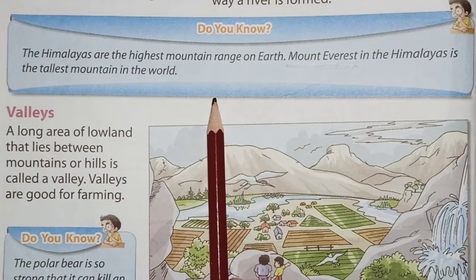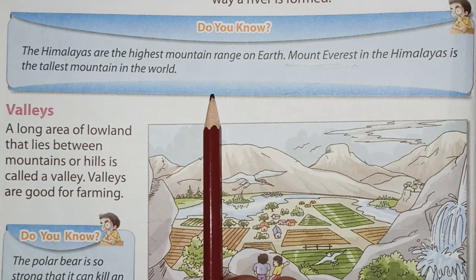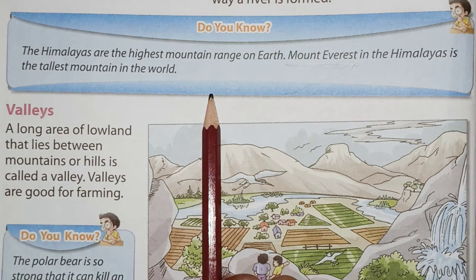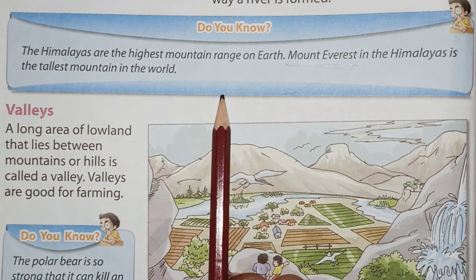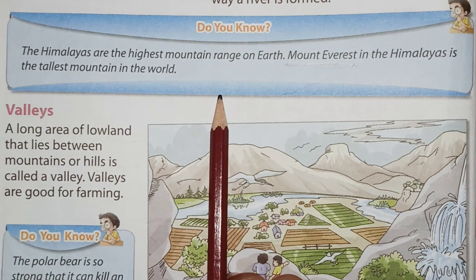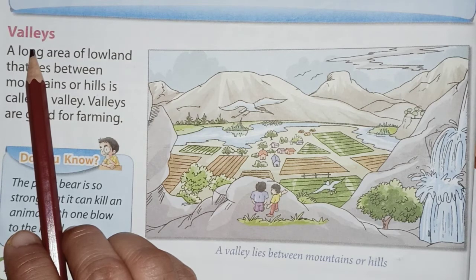Do you know, children? The Himalayas are the highest mountain range on the Earth, and Mount Everest in the Himalayas is the tallest mountain in the world, which is in Nepal. The next is valleys.